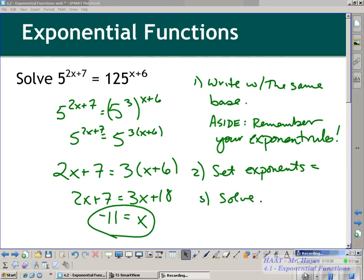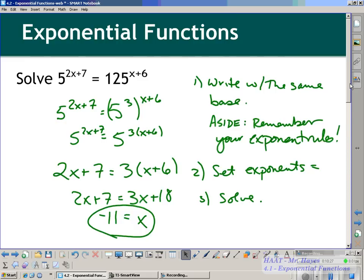And, of course, as the good, diligent, honor students that you are, plug it back in and check. So you should get, in this case, 5 to the negative 22 plus 7, negative 15th power should be the same thing as 125 to the negative 5th power. I'm sure enough it is. I'm just going to double check. Okay.